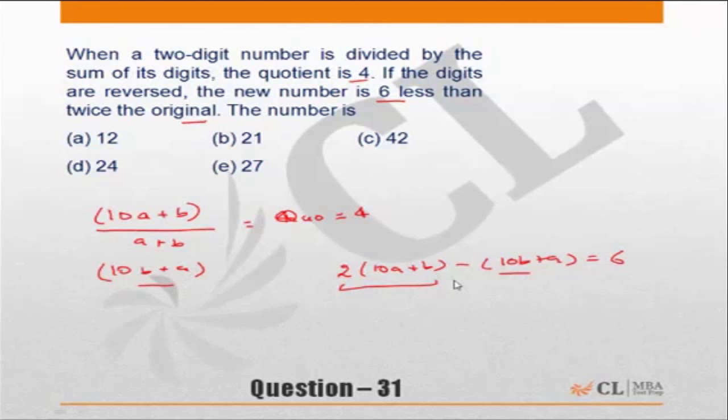And then we have two equations and start solving them. But when we have choices, why don't you just take the choices? My first thing will be the number divided by the sum of digits. Does it give me a quotient of 4? 12 divided by sum of digits is 3, quotient will be equal to 4. Yes.